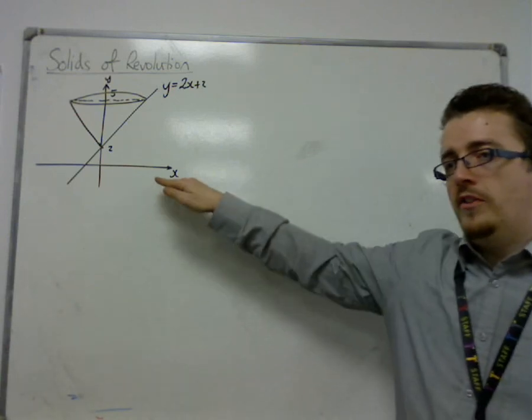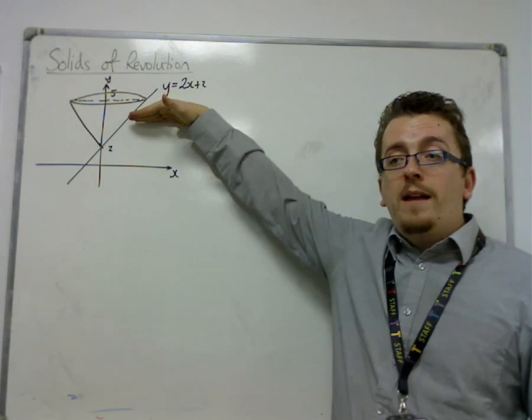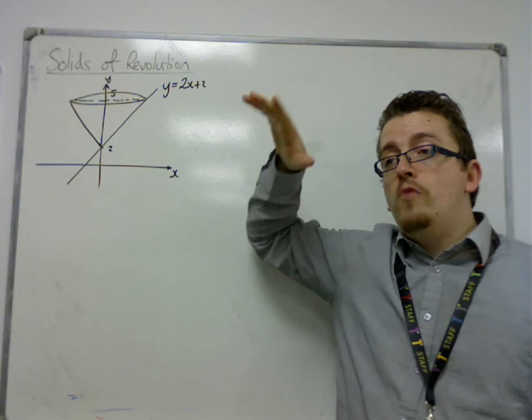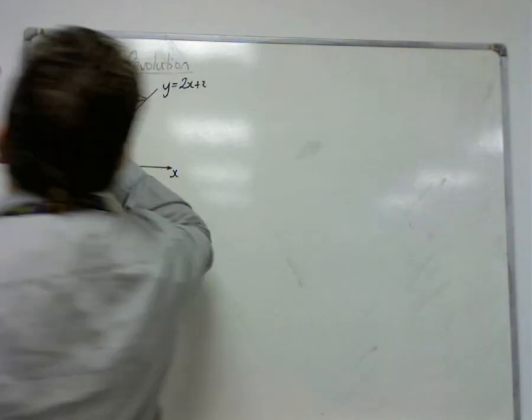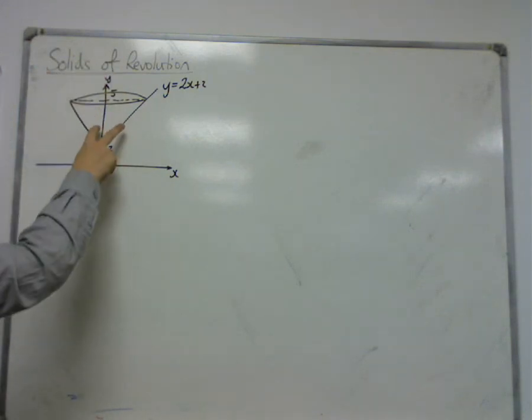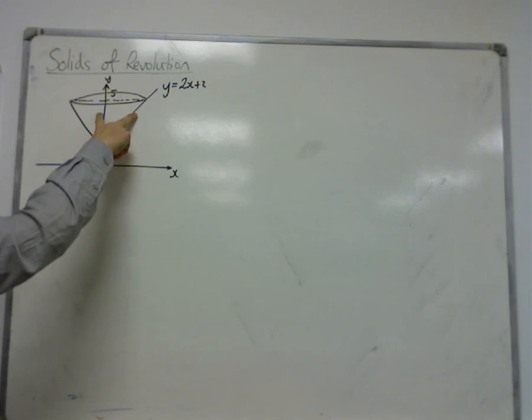This time we're going to be slicing horizontally. And each time I am going to be creating a circle again, but this time the radius isn't dependent on y, it's dependent on x. Well, it's dependent on where I am on the y-axis, but it can be given by the value of x.